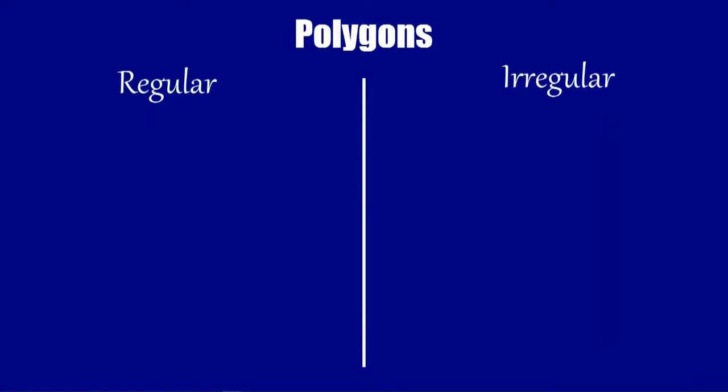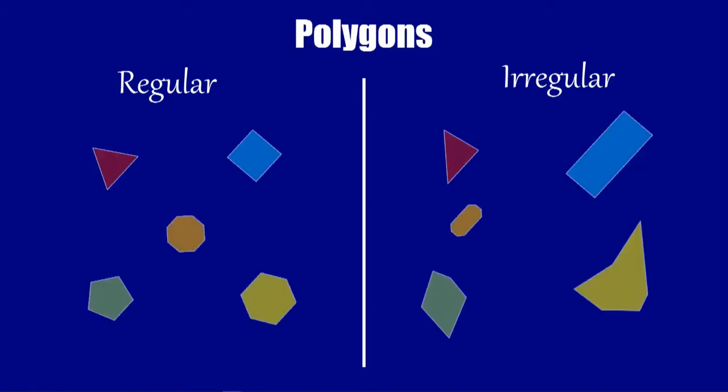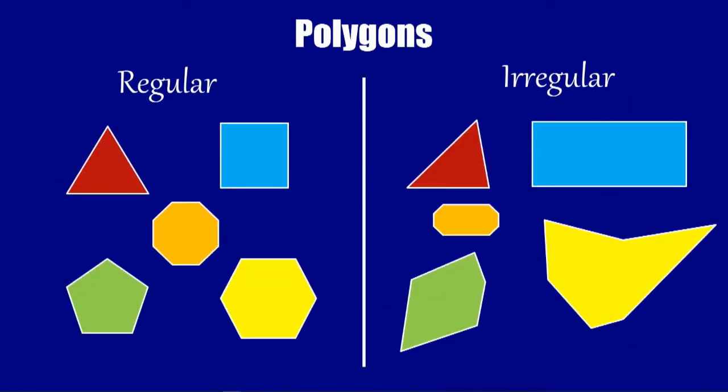Now polygons are either regular or irregular. The regular ones, all the sides are the same length and all the angles inside them are the same size. Whereas the irregular polygons, either the sides or the angles aren't all the same.